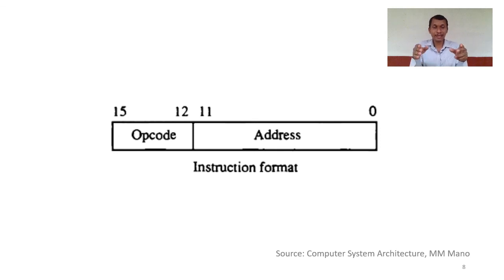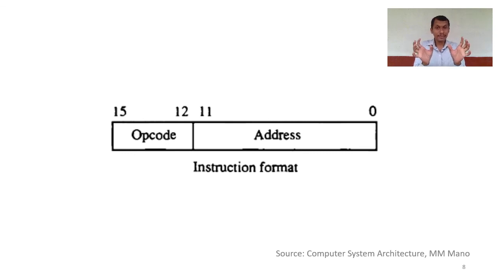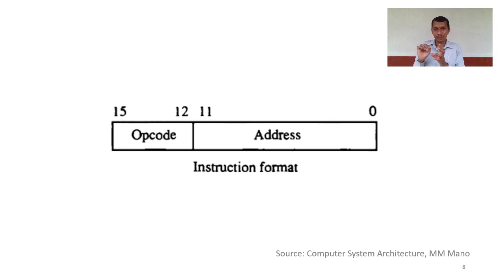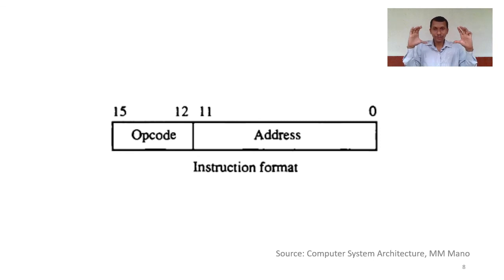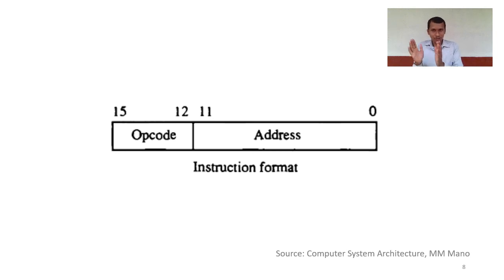In the basic computer, the simplest instruction format is designed in a two-byte format, as you can see here. There are two major parts: one is the operation code — which specifies what operation should be performed — and the second part is the address or operand part, which specifies on which data or location the operation is to be performed. Since there are only a limited number of operations, the opcode needs fewer bits, and the major portion is reserved for the operand or address.